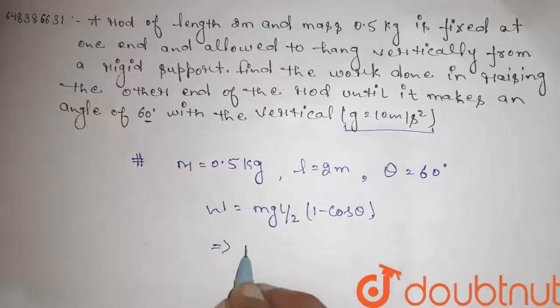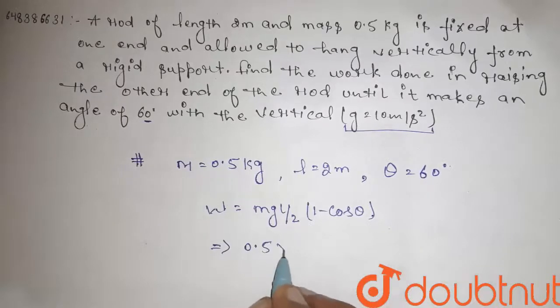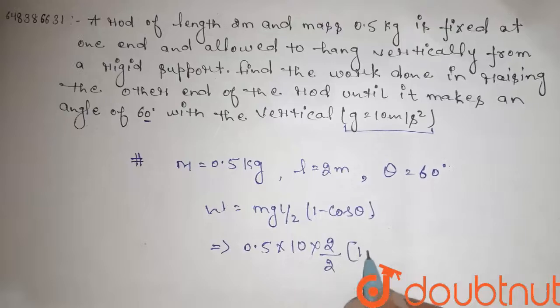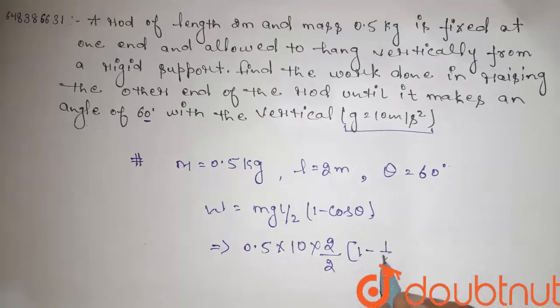That is equal to 0.5 into 10, the length is 2 divided by 2, times 1 minus cos 60, which is 1 by 2.